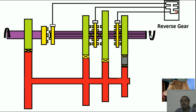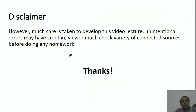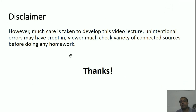In this case, the splined shaft will start spinning in the opposite direction to the engine shaft's direction of rotation. I hope that with this lecture you have understood a lot about how a constant mesh gearbox works. Thank you.